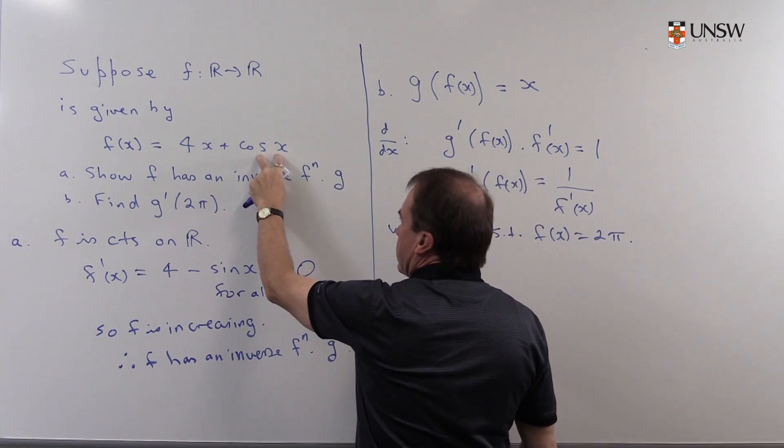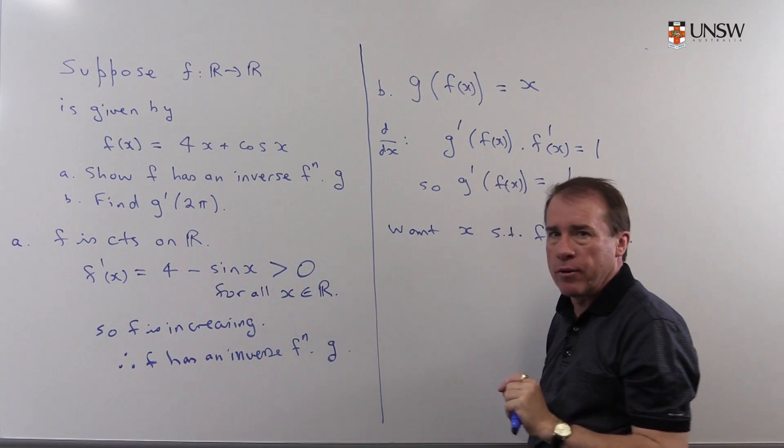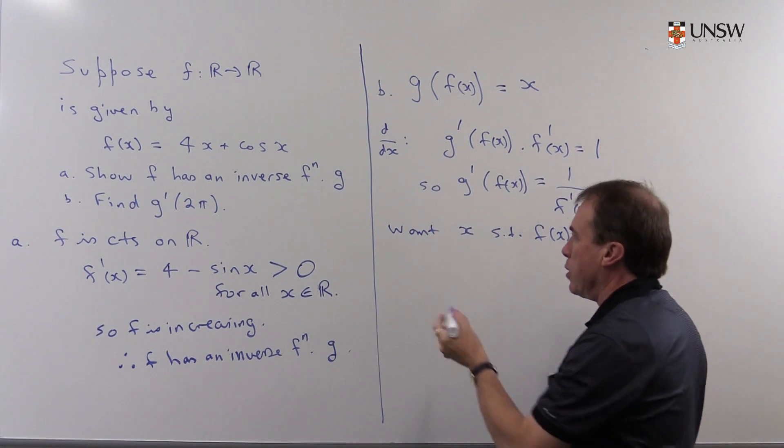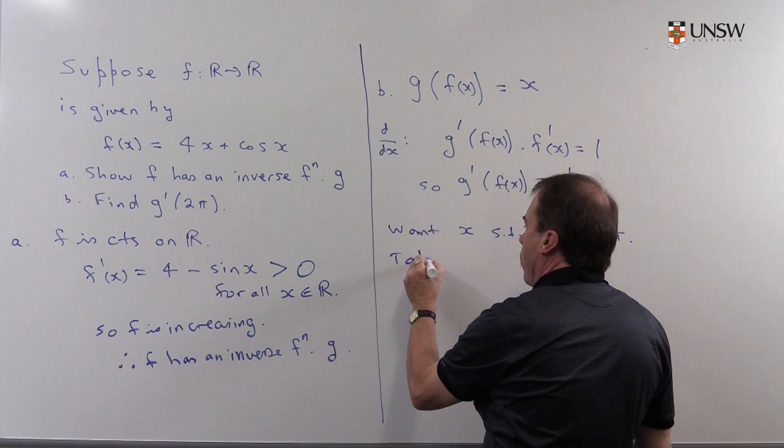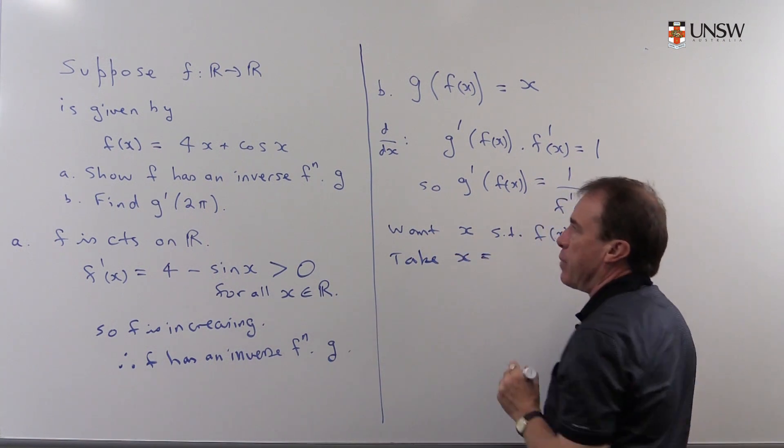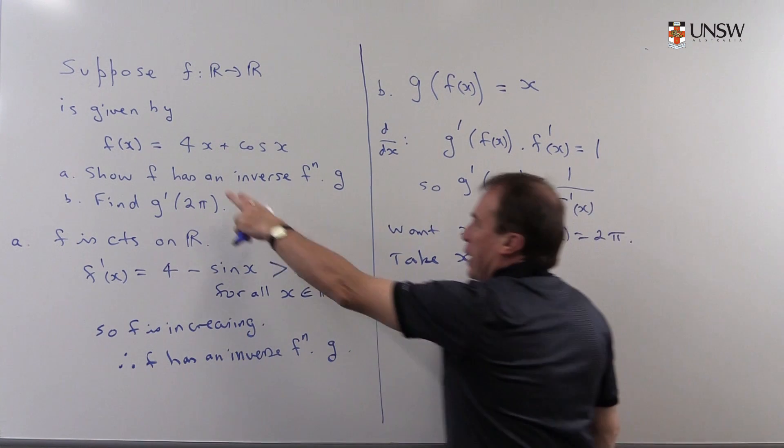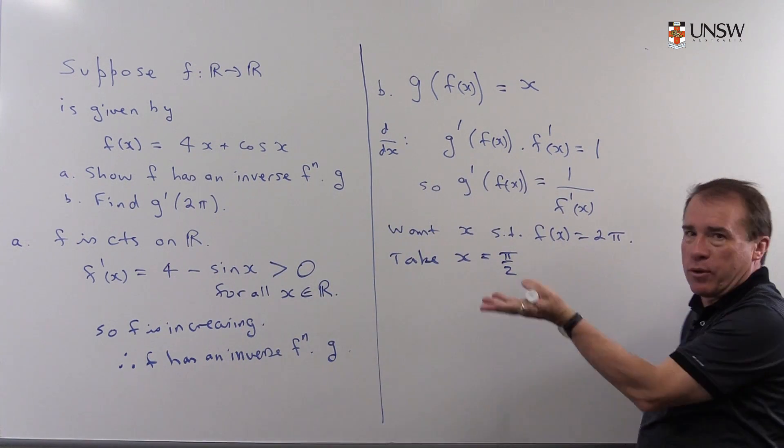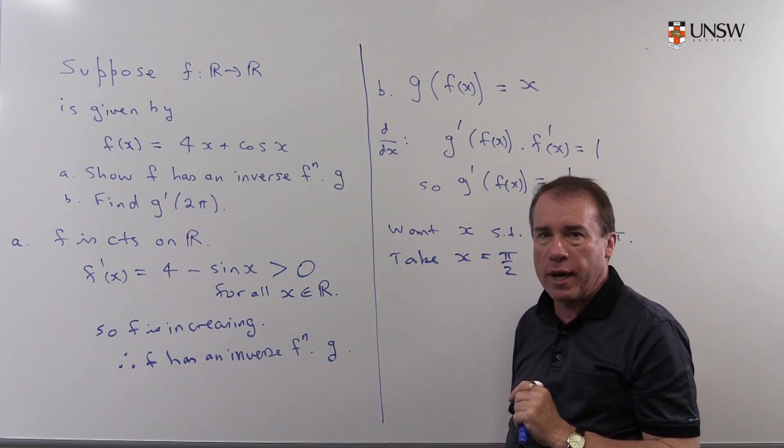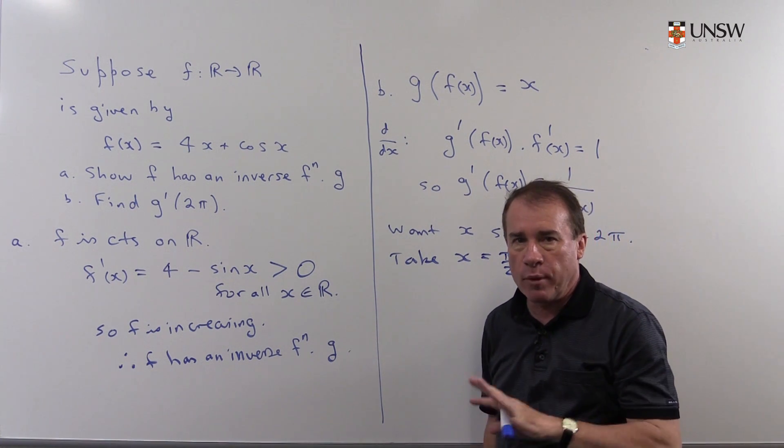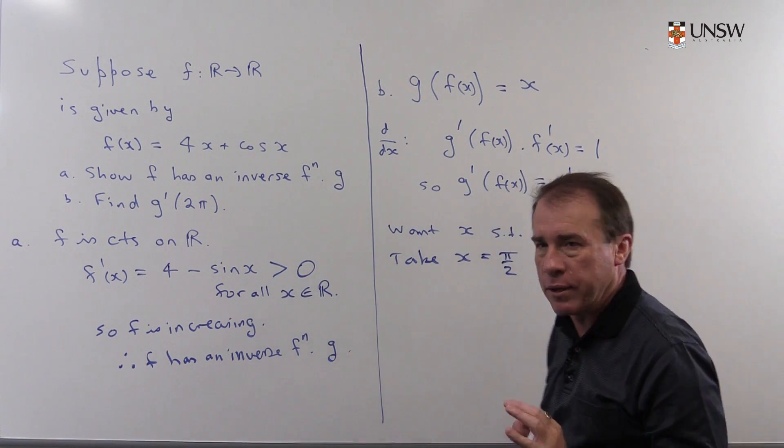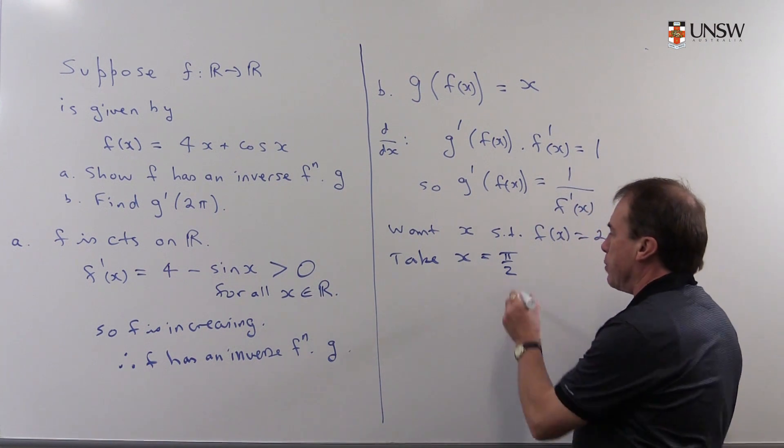Well, I'd probably want to get rid of this cosine term. I want a value of x that gets rid of the cosine term. So I'm just going to think, well, what value of x makes cosine 0? Well, π/2 does, and immediately we see that 4 times π/2 gives me 2π. So I do that by inspection. Don't try and do that algebraically. It's very complicated, if not impossible. Do that by inspection.